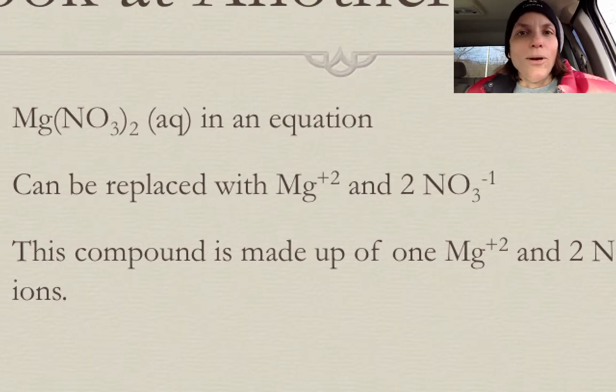Well, when you split that all apart, when you break it all down, you get one magnesium ion and two nitrate ions. So you get a relative number. You get a ratio of one to two. And it gives you a total of three ions in solution altogether.